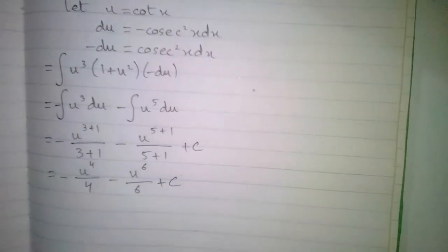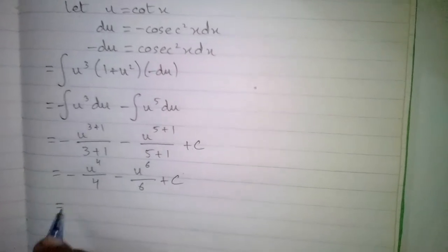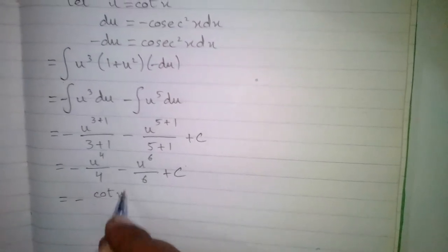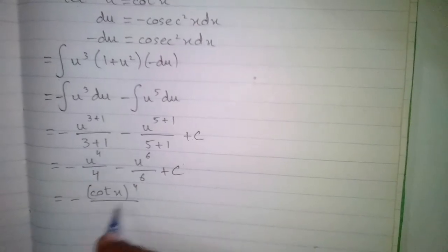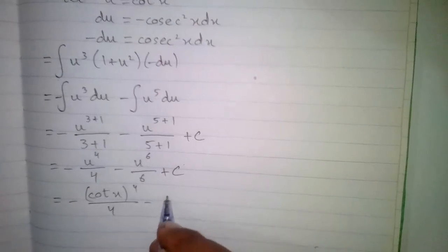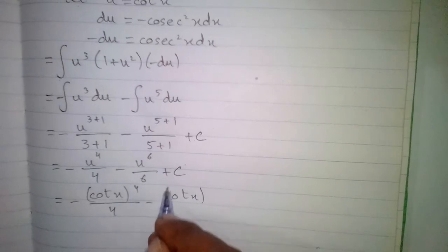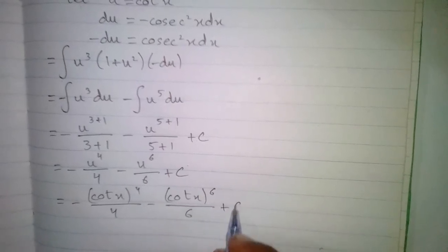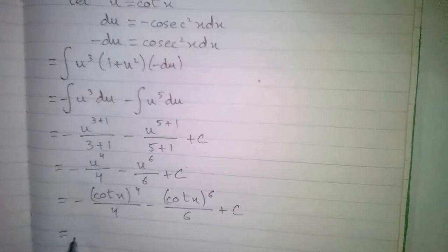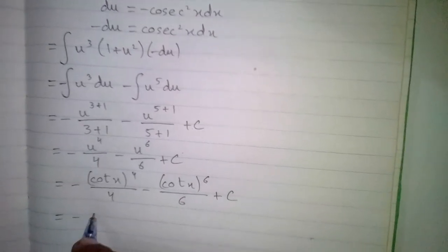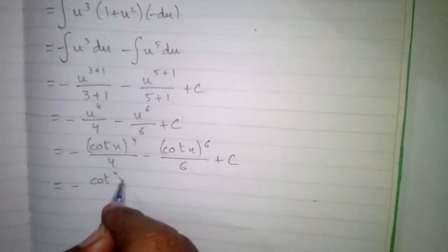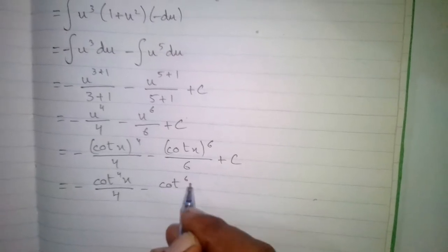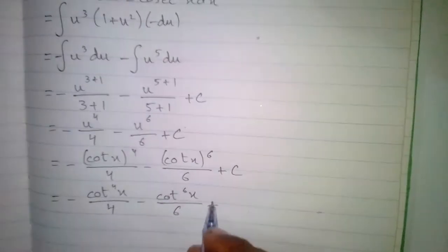Now we will put back the value of u which is cot x. So we have minus cot x to the power 4 upon 4 minus cot x to the power 6 upon 6 plus c. This can be written as minus cot 4x upon 4 minus cot 6x upon 6 plus c.